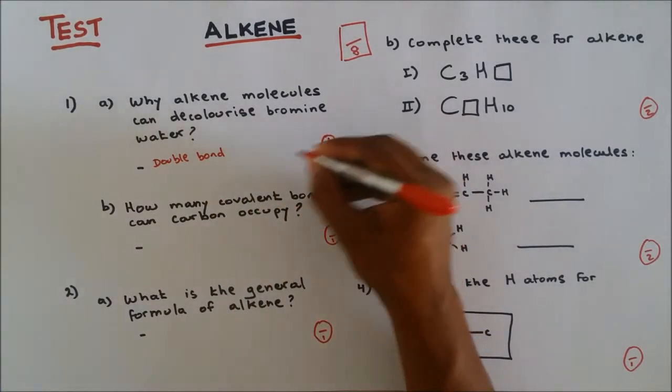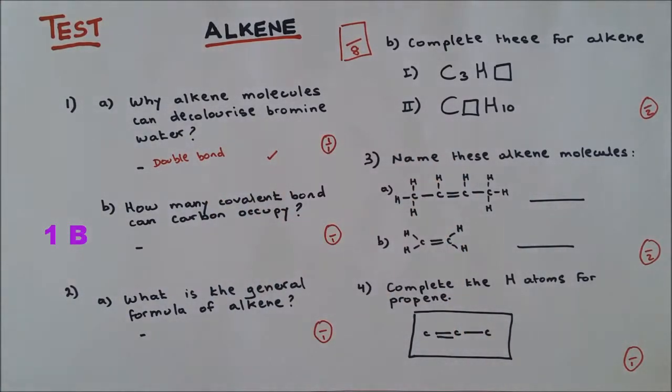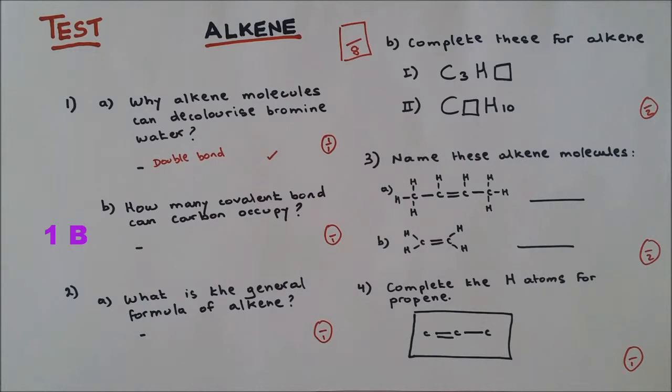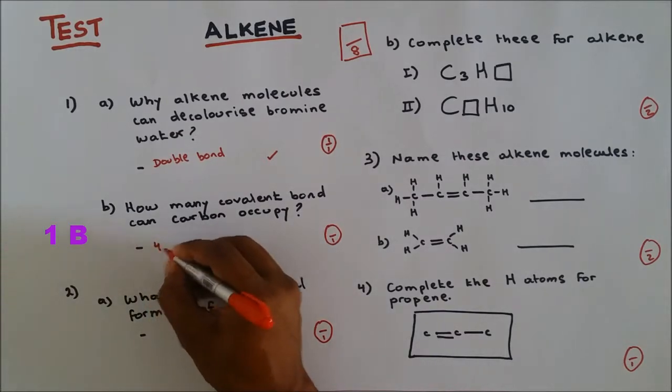One out of one. Question number 1b: How many covalent bonds can carbon occupy? The maximum number of bonds that a carbon can occupy is four. One out of one.